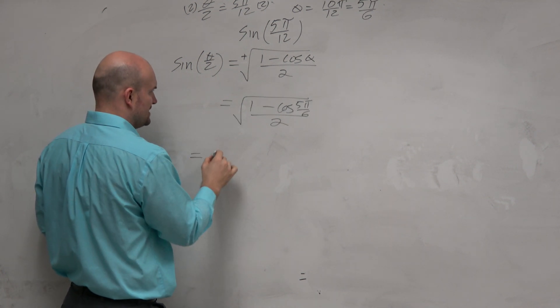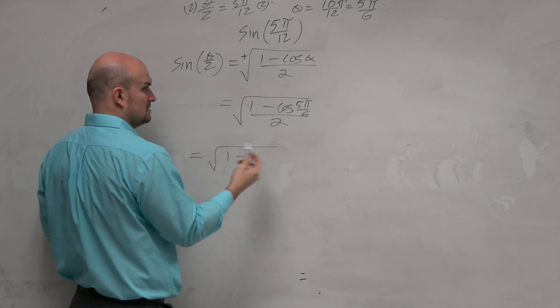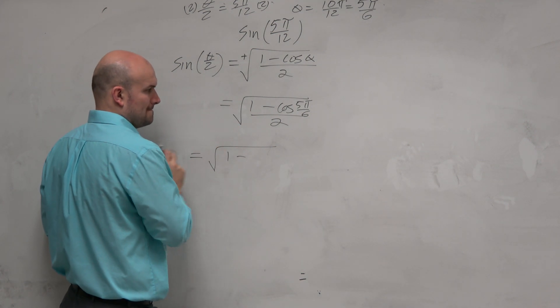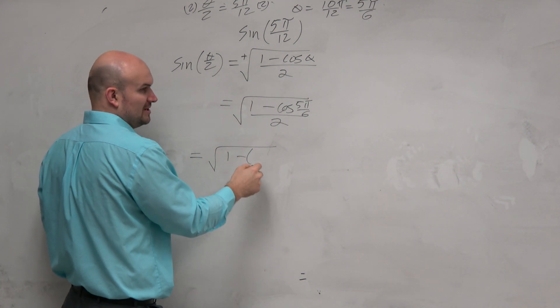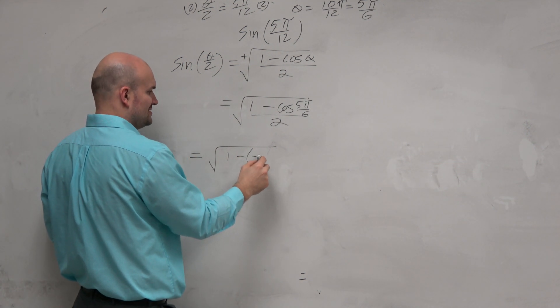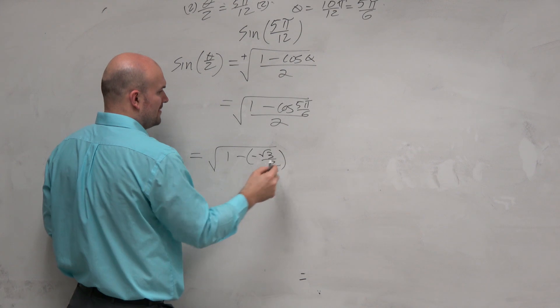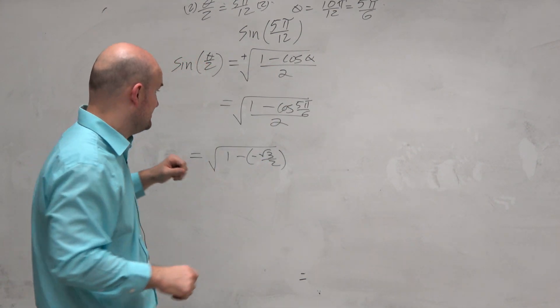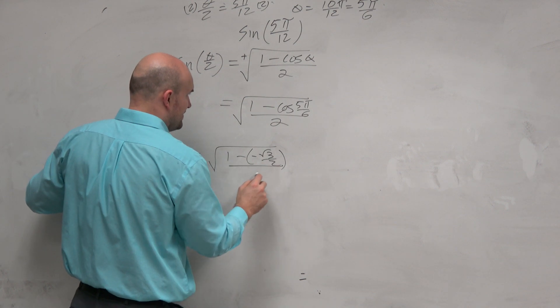So the cosine of 5π over 6 is? Unit circle. Anybody? Let's have a quiz next class period. Just remember that. Negative square root of 3 over 2, because that's in the second quadrant. So cosine is negative, right? Don't make that mistake. And then that's divided by 2.